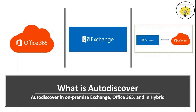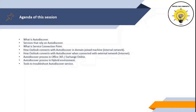Hi guys and welcome to my channel. In this video, I will be discussing what is Autodiscover service, which services rely on Autodiscover, what is Service Connection Point or SCP, how the Autodiscover process works when a user configures an Outlook profile from a domain-joined machine, from a non-domain-joined machine or from the internet, the Autodiscover process in Office 365 or Exchange Online, in a hybrid environment, and the tools we can use to troubleshoot or test Autodiscover service.